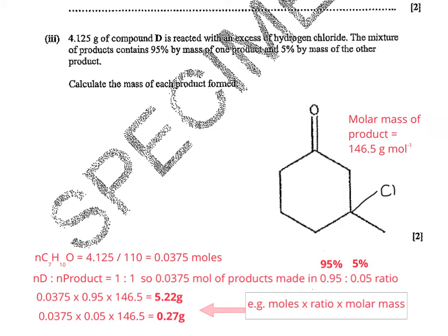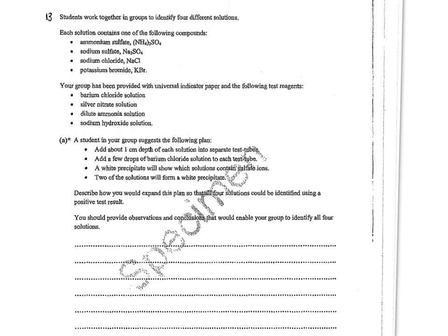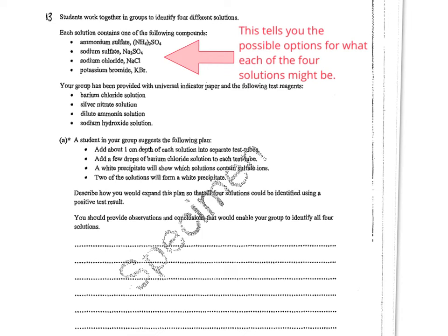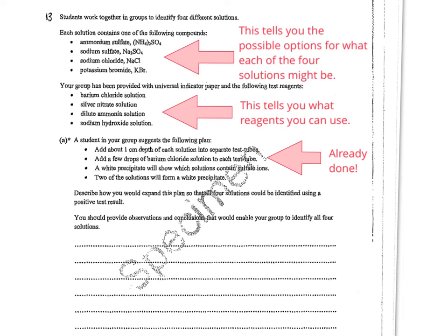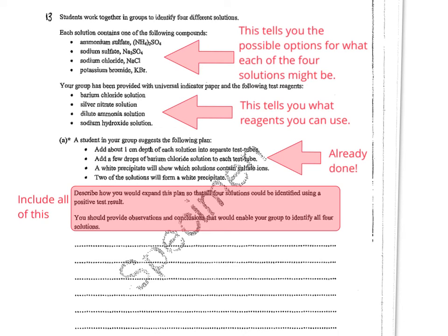Let's move to the final selected question — the level response one on ion testing. There's quite a lot to process, so let's think about what the question is giving us first. The list of solutions tells us what the solutions might be: ammonium sulphate, sodium sulphate, sodium chloride, and potassium bromide. The next set of bullet points tells you which reagents you can use, so don't bring in ones not listed. It also tells you what's already been done, so don't waste time discussing the sulphate test — it's been done already. Make sure you include all of the things you are asked to and don't leave anything out.